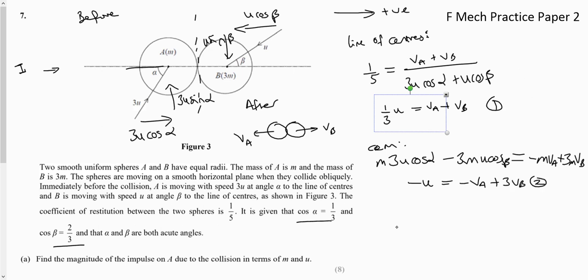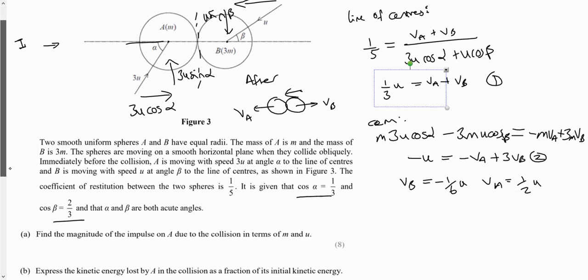So if I solve equations 1 and 2 simultaneously, I get velocity of B is negative 6u, velocity of A is a half u. That just means my diagram was wrong, so actually particle B is moving that way, or sphere B is moving that way afterwards, but it doesn't really matter. So I actually don't need that anyway.